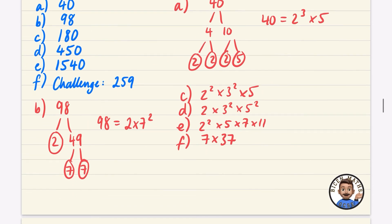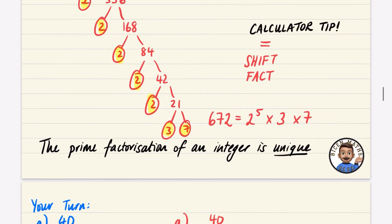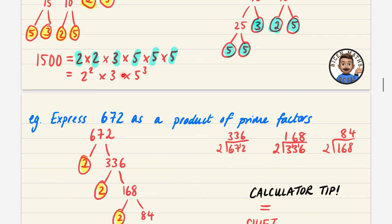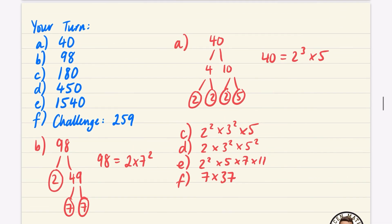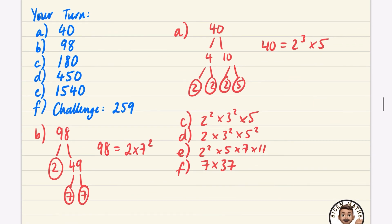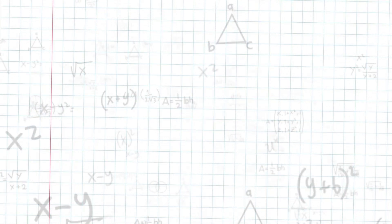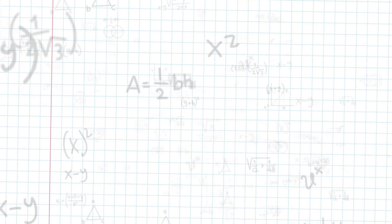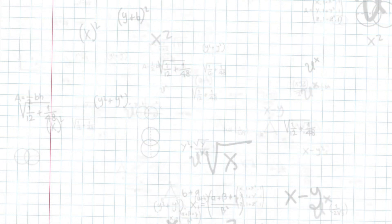One important fact: the prime factorization of any integer is unique. There is no other way to express 672 or 1500 using prime factors — it is completely unique. In the next video we'll look at the highest common factor. If you found this helpful, drop a like and consider subscribing.